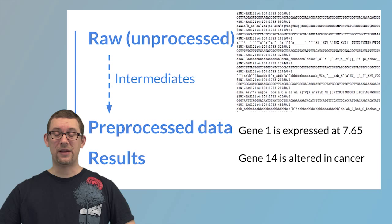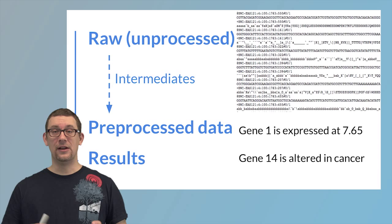And through a process called preprocessing, we take this raw data and we transform it into somewhat more tidy and interpretable data. We typically go through some steps that we try to normalize the data to make different samples more comparable.